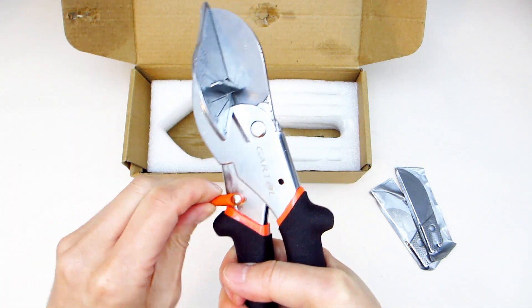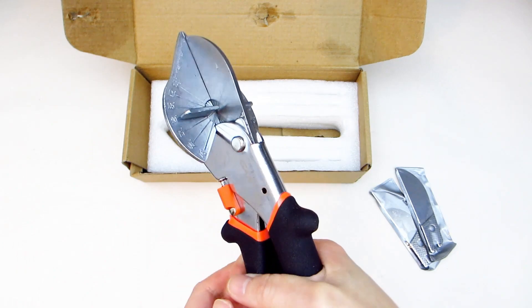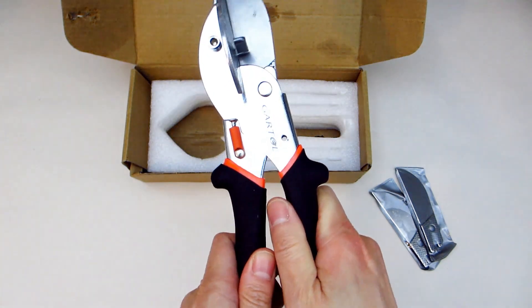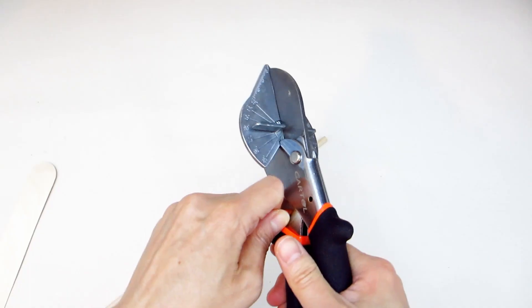To lock the shears, return the orange clasp back to the default position by sliding it back up. Once locked, the shears will not open and will be ready for safe storage.